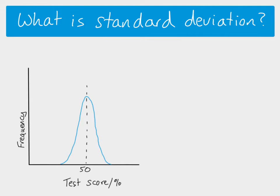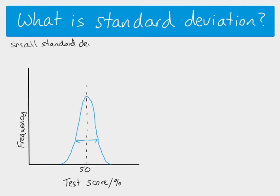Now if you calculate standard deviation — and we'll look at how you calculate it in a minute — you end up with a number that shows the spread from the mean. So if the mean is in the middle, the standard deviation goes out on either side. In this case the standard deviation is quite small, which means you don't go very far from the mean to get out to where the curve is. Because it's a normal distribution, a small standard deviation means this distance is small.